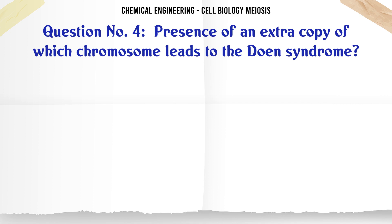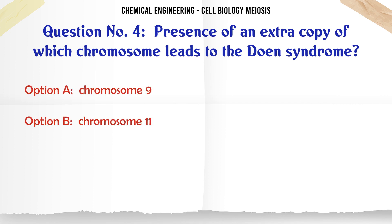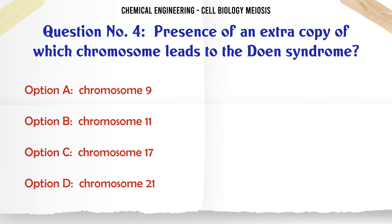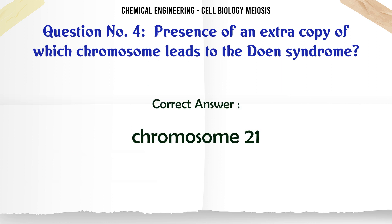Presence of an extra copy of which chromosome leads to Down syndrome? A. Chromosome 9. B. Chromosome 11. C. Chromosome 17. D. Chromosome 21. The correct answer is Chromosome 21.